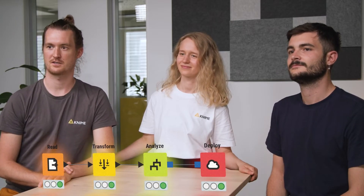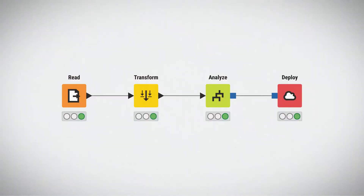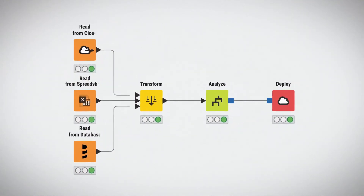The main responsibility of a data engineer is to set up the data infrastructure of an organization. This would mean collecting data from different sources like cloud marketplaces, CRMs, or external databases, doing initial cleaning and building pipelines so that anyone in the company can access the data.